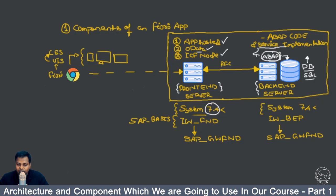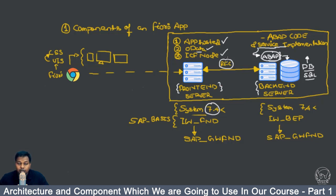In the back-end, you have to activate the service implementation, and inside the service implementation you have the ABAP code written. This ABAP code is implemented in the services responsible for sending data to your front-end server via RFC. RFC — Remote Function Call — is a protocol that SAP-to-SAP systems use to communicate with each other, allowing communication between the back-end system and the front-end system.